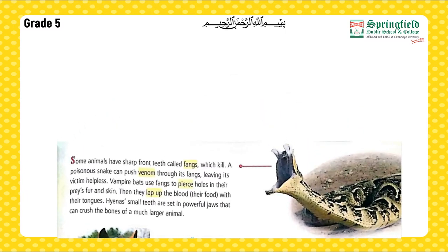Some animals have sharp front teeth called fangs. A poisonous snake can push venom through its fangs, leaving its victim helpless. Vampire bats use fangs to pierce holes in their prey's fur and skin, then they lap up the blood — their food — with their tongues.